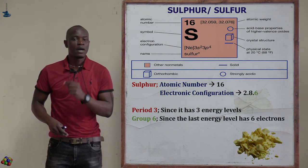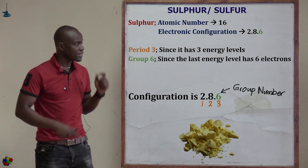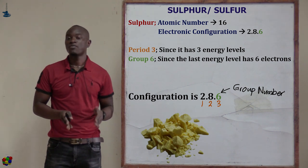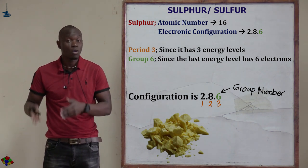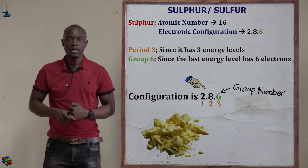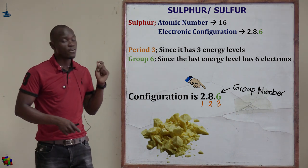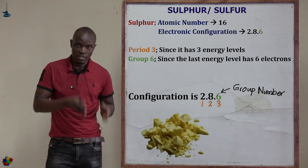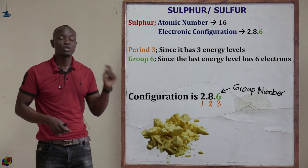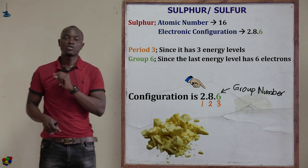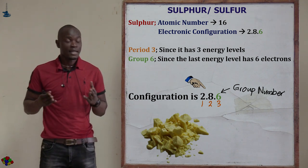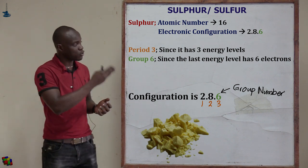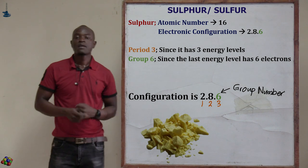Using the atomic number, we can determine the group and period sulfur belongs to. The electronic configuration of sulfur is 2, 8, 6 — meaning it has three energy levels: two, eight, and six.